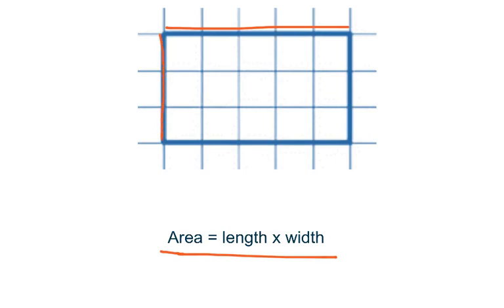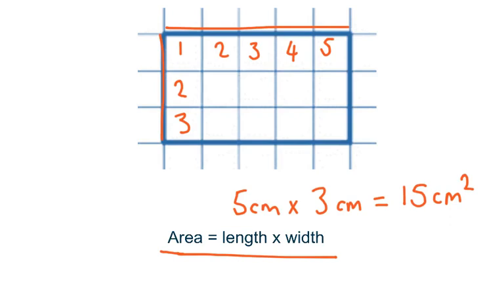And we can see if we look at the length, we've got 1, 2, 3, 4, 5 centimeters. And then we look at the width, we're going to multiply that by 1, 2, 3. So the calculation you're going to be doing here is 5 centimeters times 3 centimeters. Which, we know our times tables, we can tell that that is 15 centimeters squared.